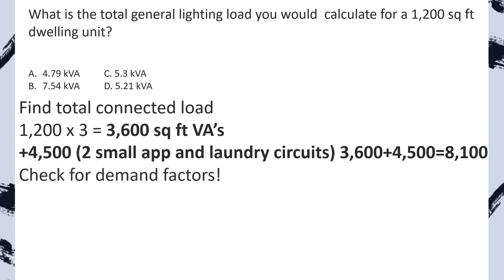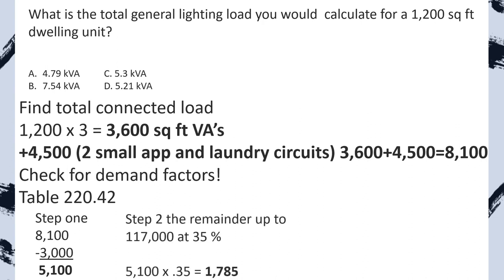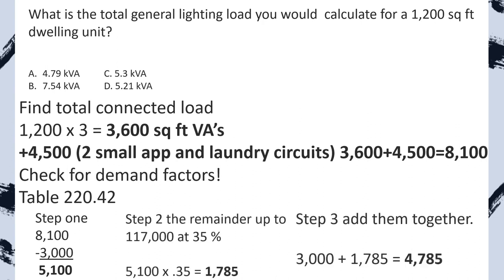Now we check for demand factors. We head to table 220.42, step one, we minus 3,000 and take it at 100%. Step two, we multiply that remainder by 0.35. All we have to do now is add them back together, and we end up with a new reduced load of 4,785 VAs, and we select A. Great job.